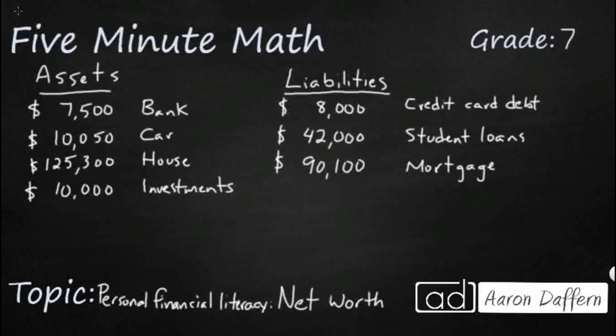When we're calculating our net worth, it's divided into two sections. We have our assets and our liabilities. Assets are going to be thought of as positive values. These are things that we either own, or maybe cash that we have on hand, and that, if needed, could be converted into cash.